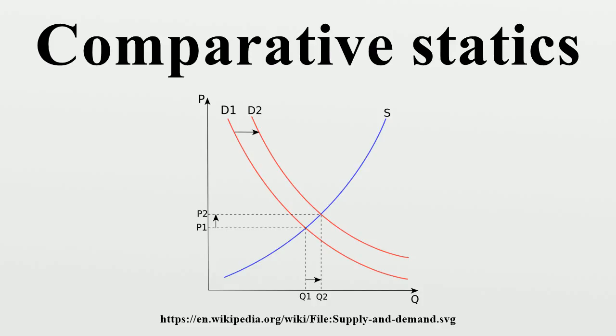Provided the profit function satisfies the smoothness and concavity requirements, the comparative statics method above describes the changes in the firm's profit due to small changes in the tax rates.